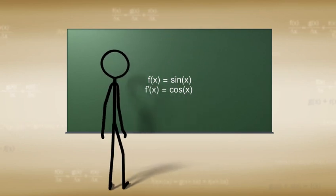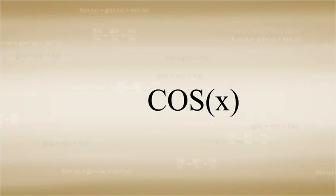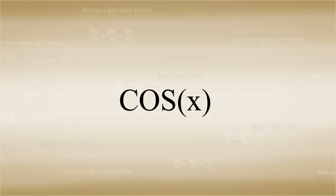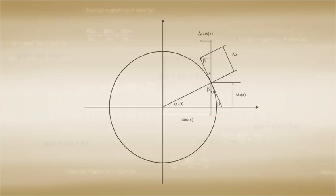Since we managed to find the derivative of sine of x relatively quickly, let's try to use the same approach with the cosine of x. This graph should look familiar and it will serve us well to find the delta cosine x and its relation to other geometric values in the picture.